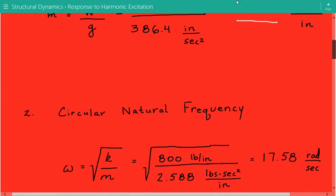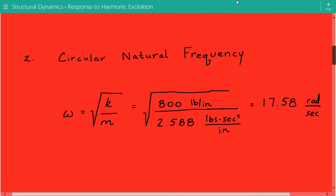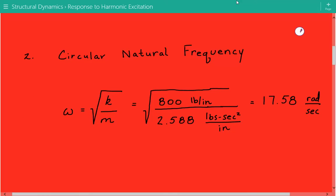Next, we'll calculate the circular natural frequency, which equals the square root of stiffness divided by mass. The stiffness is 800 pounds per inch, so our circular natural frequency equals 17.58 radians per second.